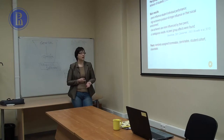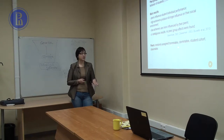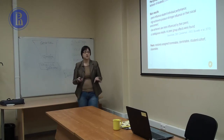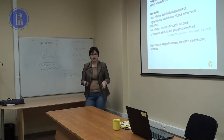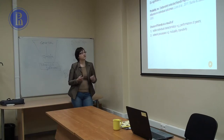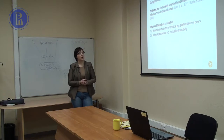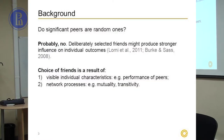Usually under investigation, researchers randomly assign a group of peers, such as roommates, dorm mates or classmates, when the division into groups works in a random way. But actually, are significant peers random ones? This is an important question, and we should say that probably no — deliberately selected friends might produce stronger influence on our individual outcomes. Our friends influence us more strongly than random people, because with them we spend a lot of time together, we have common practices, and they are more important to us than random people from our classrooms. So it's important to take a look at the mechanisms of choosing a friend.